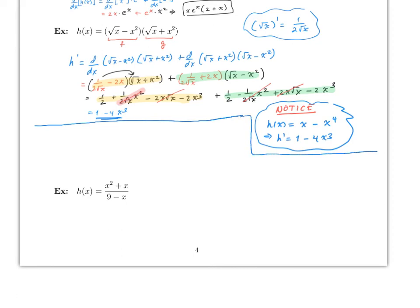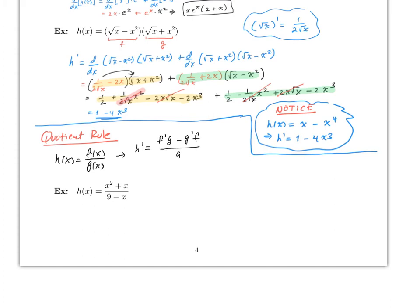Now let's go to the quotient rule. The quotient rule is the following: if h(x) equals f(x) divided by g(x), remember quotient means division, then h prime is going to be f prime times g minus g prime times f, all over g squared. Let's try an example using the quotient rule.